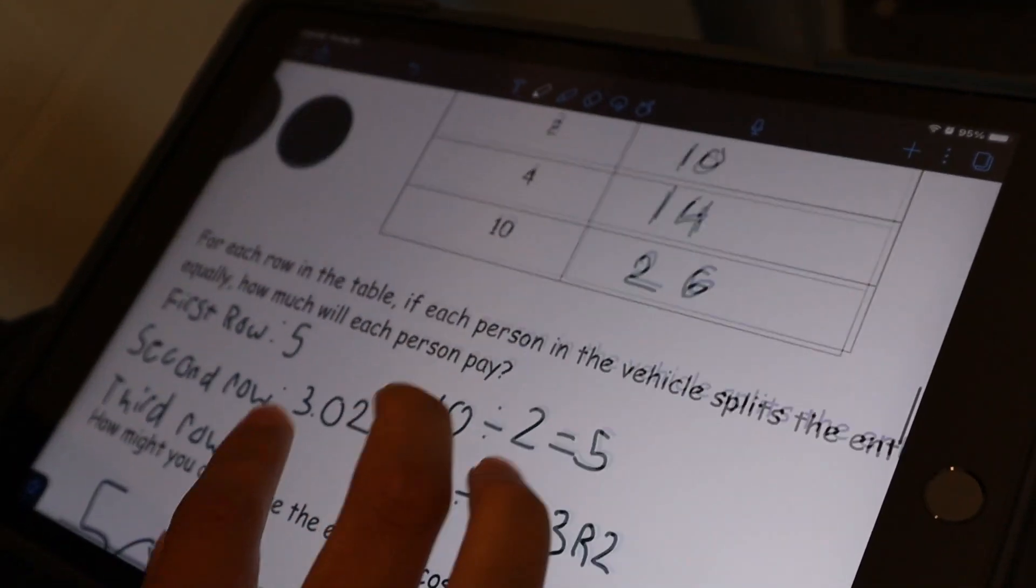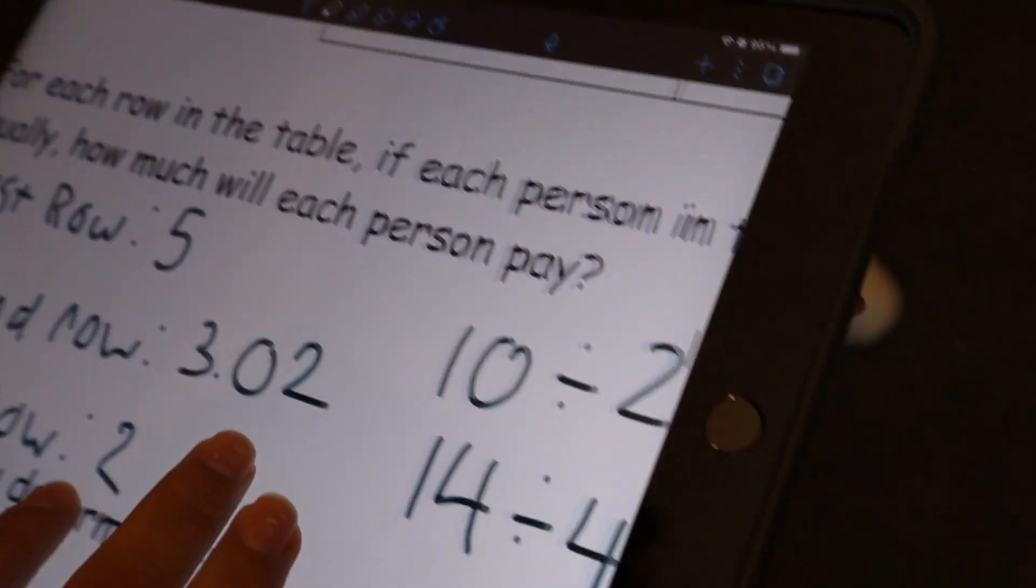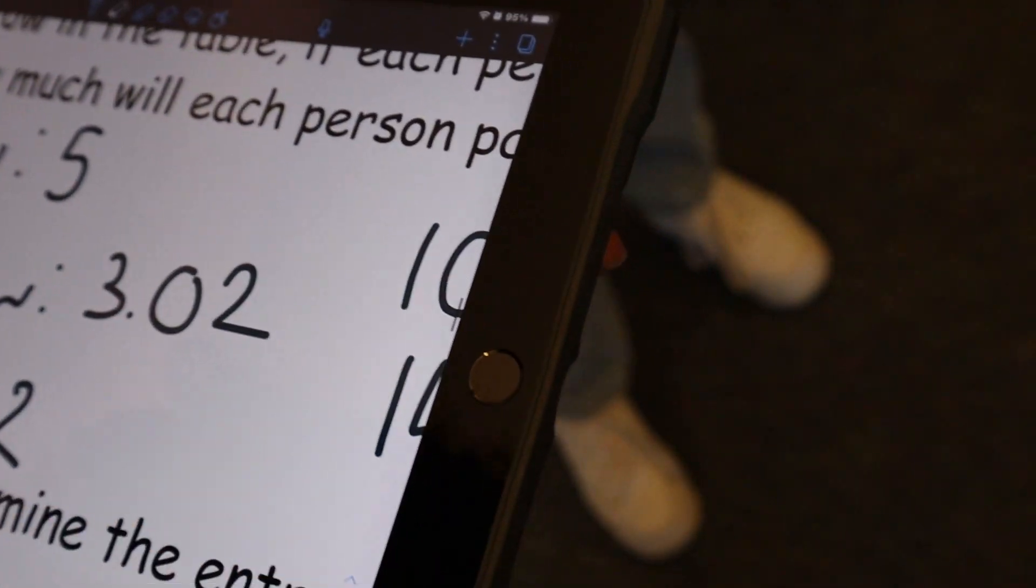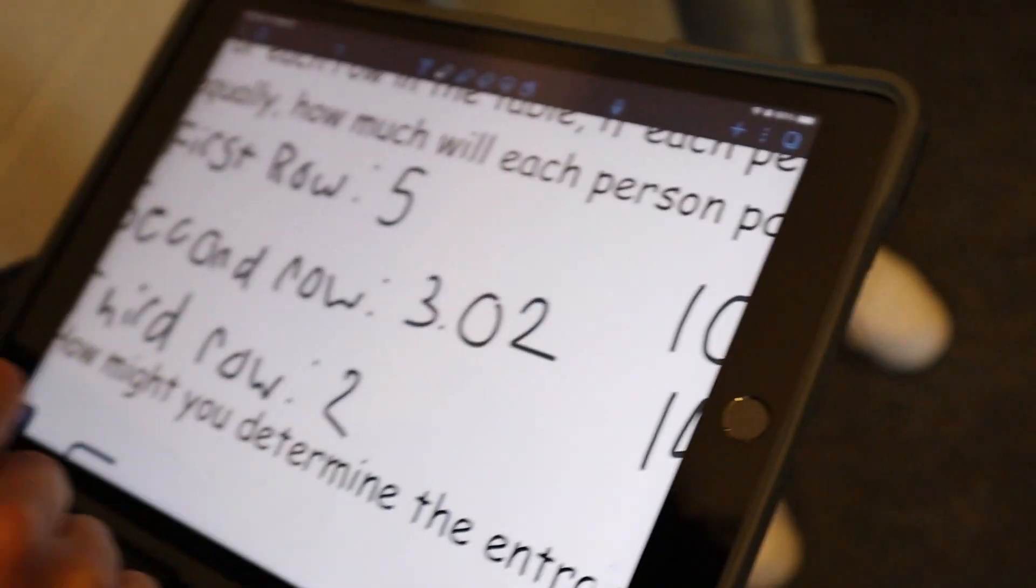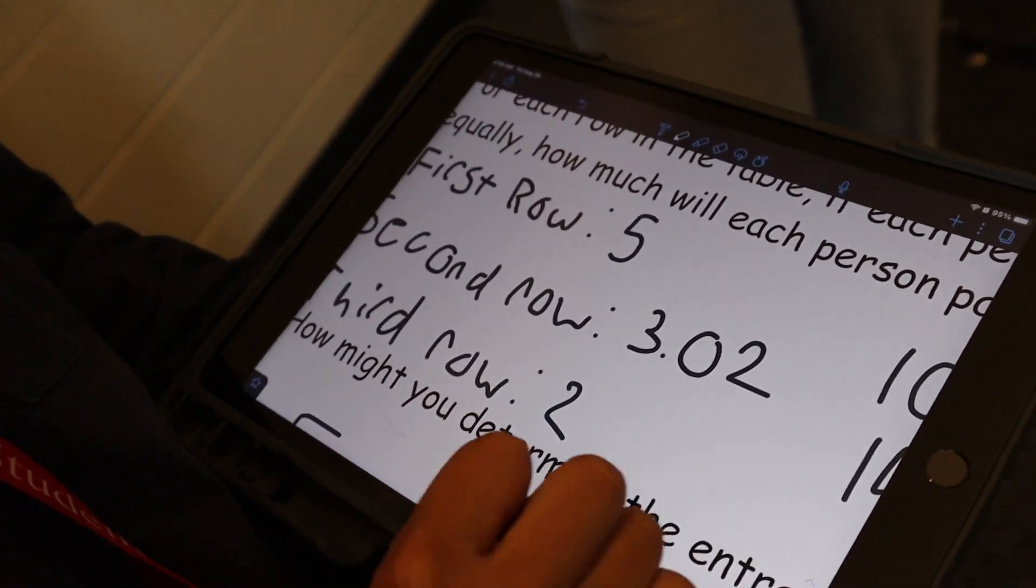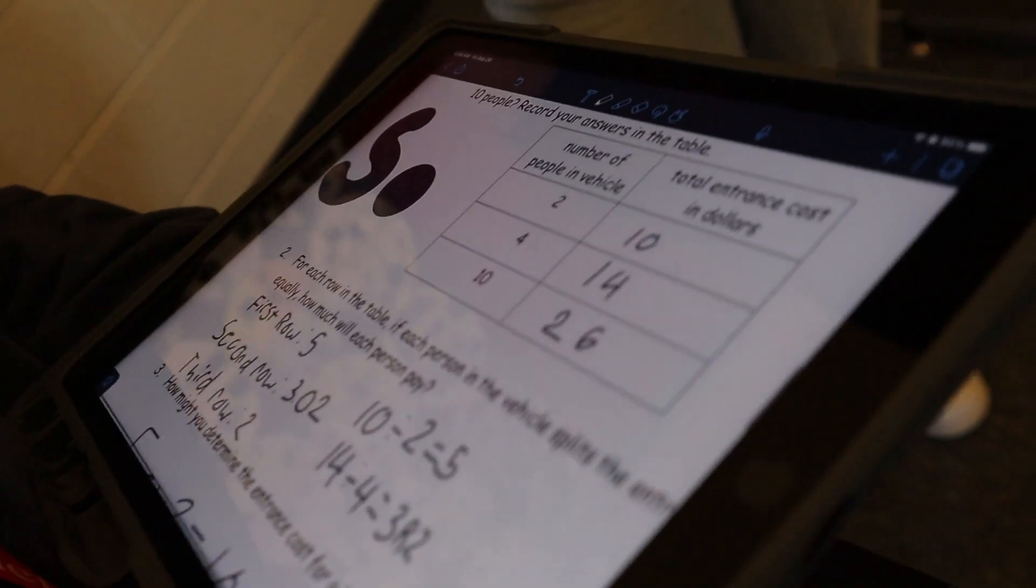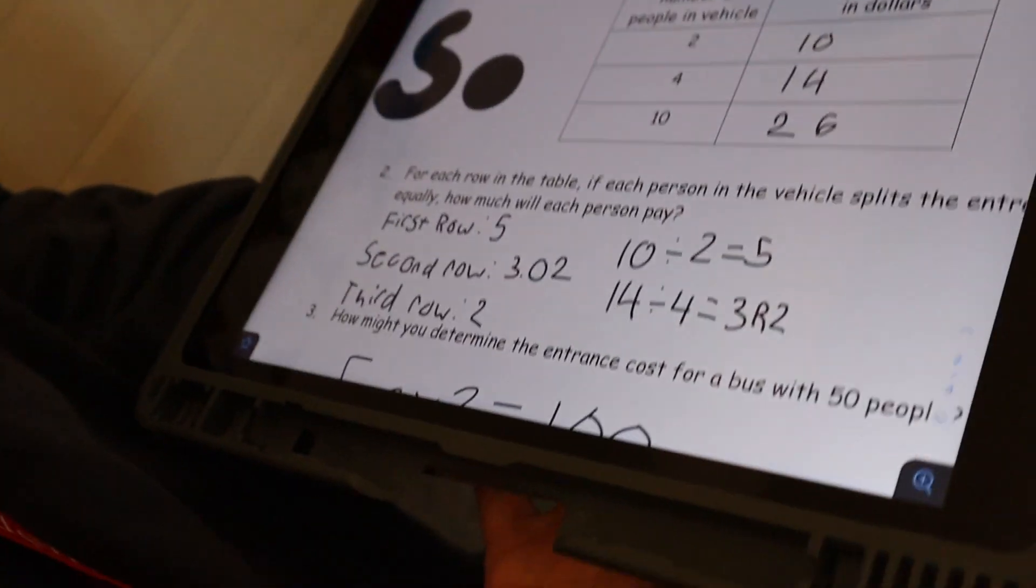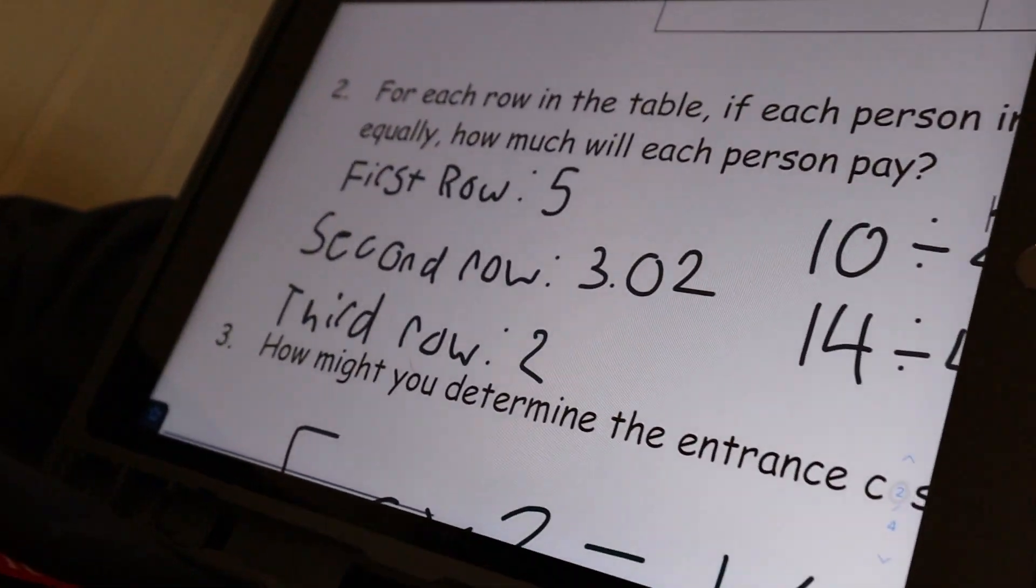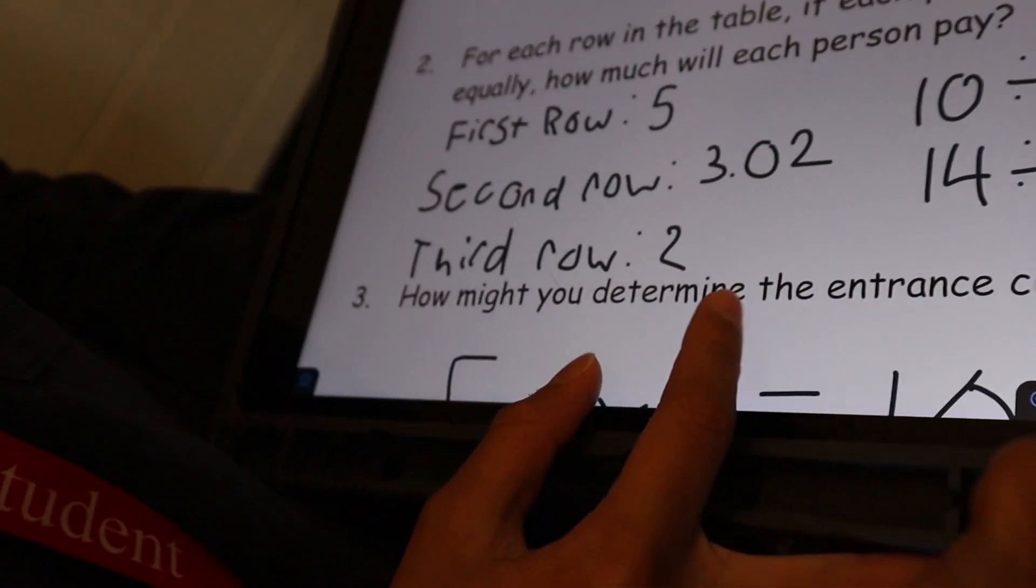Okay. So for the first row, I got five. For the second row, I couldn't get an answer, so I did the calculations and got $3.02, and I was kind of confused for the third row, so I don't exactly know if the answer is right. Okay. How did you get $26 in that third row?